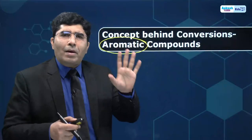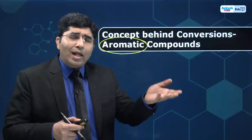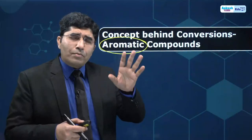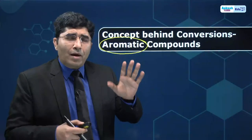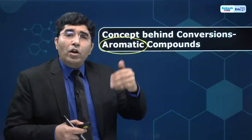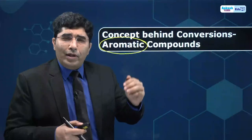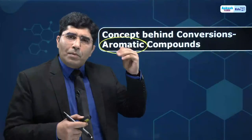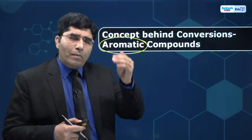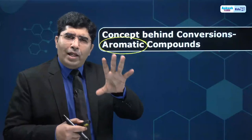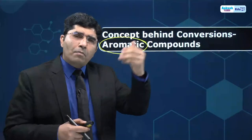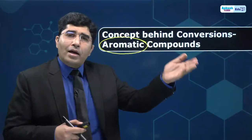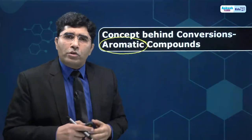In hydrocarbons we have to learn about benzene. In 12th class, we read the first chapter — Haloalkanes and Haloarenes. For haloarenes, I would like to take chlorobenzene as the starting material and now we will convert it to the rest of the organic compounds.